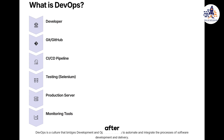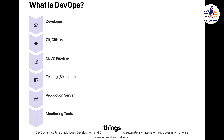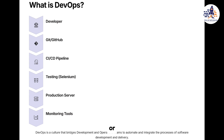After that, it goes for monitoring — once the code is in production it goes for monitoring. In simpler terms, DevOps is basically a process or a culture which helps us to bridge the gap between the development and operations team so that we can accelerate or increase software delivery faster.